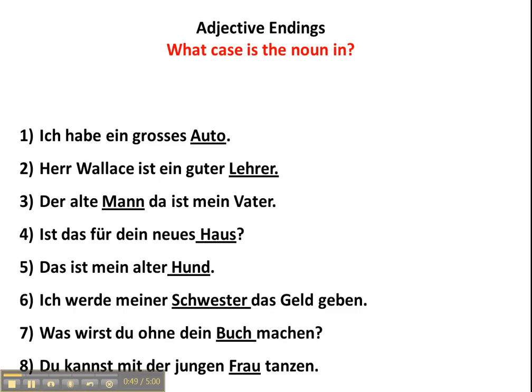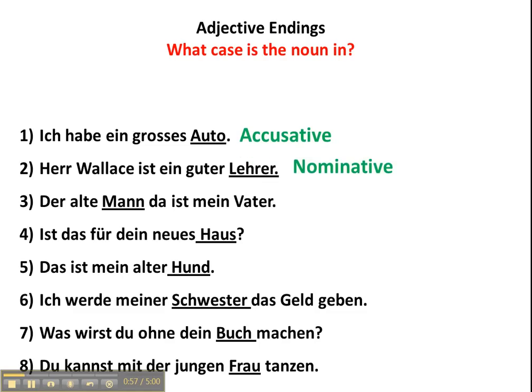Ich habe ein großes Auto. In this case, Auto is the direct object, so therefore accusative. Herr Wallis ist ein guter Lehrer. In this case it's nominative, because it comes after a form of the verb sein — in this case, ist — therefore the predicate nominative.